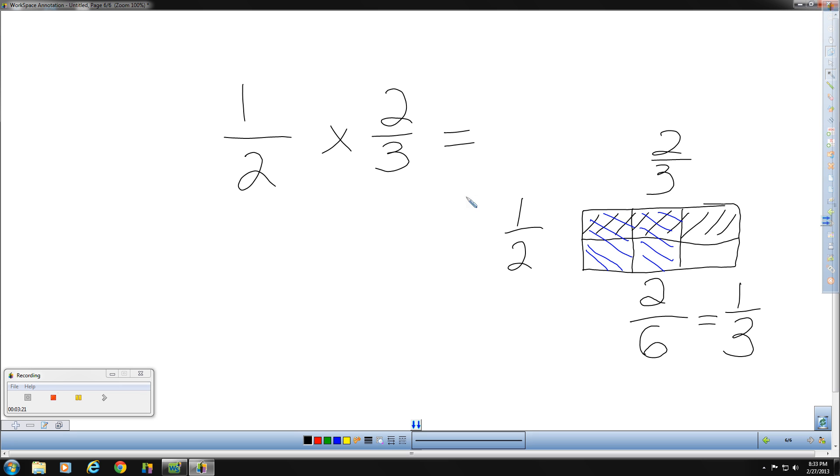If you think about it, that makes sense, because what you're really saying is one half of two thirds of the pieces. Well, what is half of two? Half of two is one. One third. One times two is two. Two times three is six. And, again, if we do simplify, that is one third.